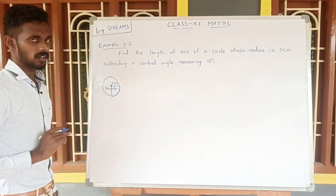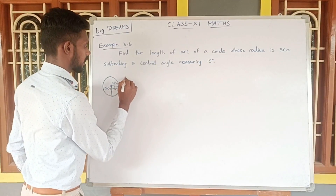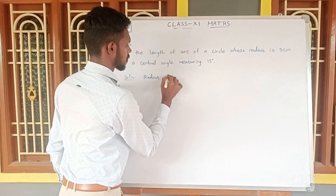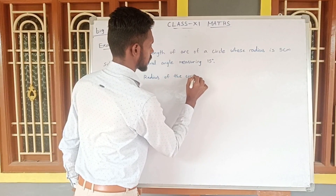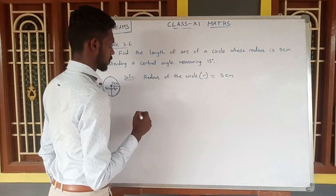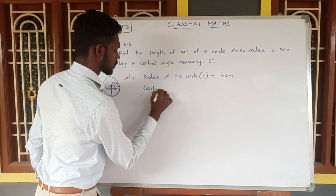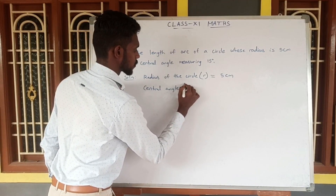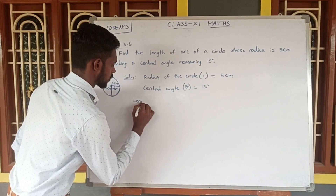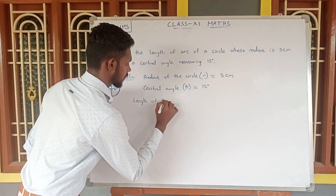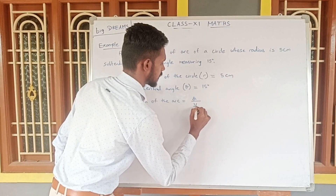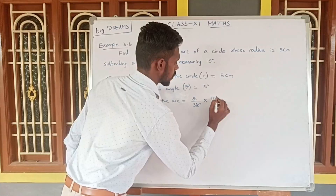We have to find the length of the arc. Let us use the arc length formula. Solution: given — radius of the circle, the R value is 5 centimeter. The central angle theta is 15 degrees. We need to find the length of the arc. The formula is: theta divided by 360 degrees, multiplied by 2 pi r.